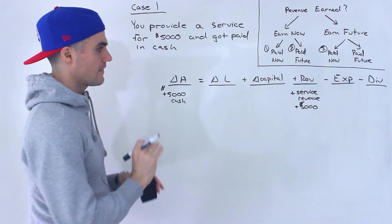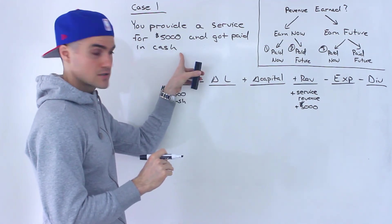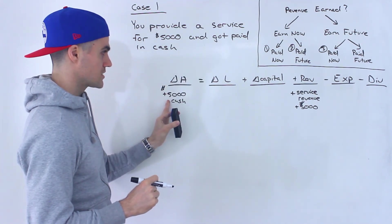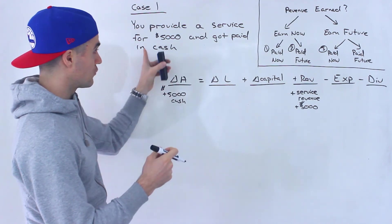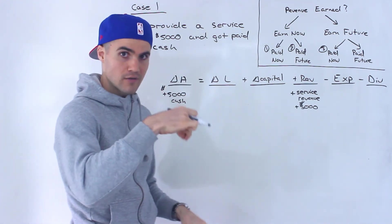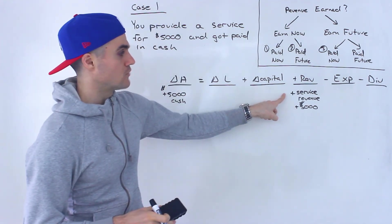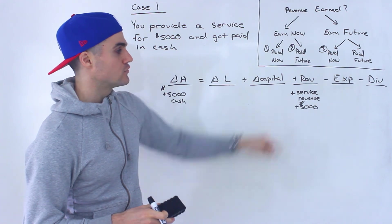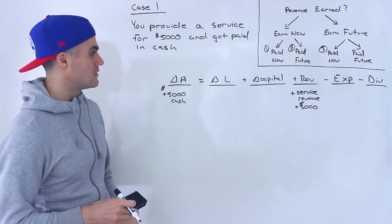That would be it for this transaction. Your cash goes up, and you provided the service, so you earned the revenue in this period, so you recognize that revenue for $5,000 as well.